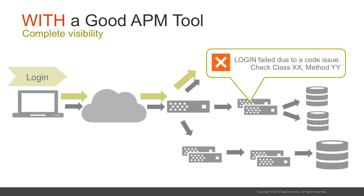A good APM tool can open up this black box for you and give broad and deep visibility into the inner workings of systems running in production. For any given transaction, it will give you complete visibility into which servers, network links, backends, classes, and methods are responsible for processing delays and errors. It will reveal exactly where the problems are located, which is exactly the information you need to get the problem fixed.